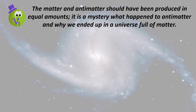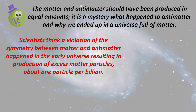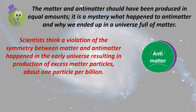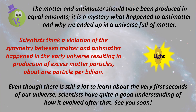The matter and antimatter should have been produced in equal amounts. It is a mystery what happened to antimatter and why we ended up in a universe full of matter. Scientists think a violation of the symmetry between matter and antimatter happened in the early universe, resulting in production of excess matter particles — about one particle per billion.